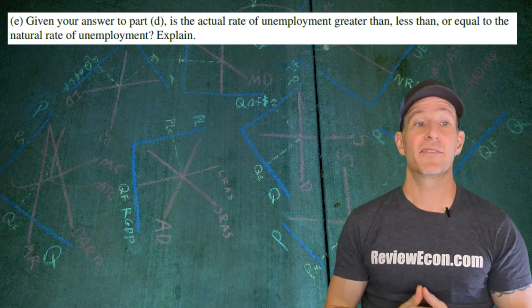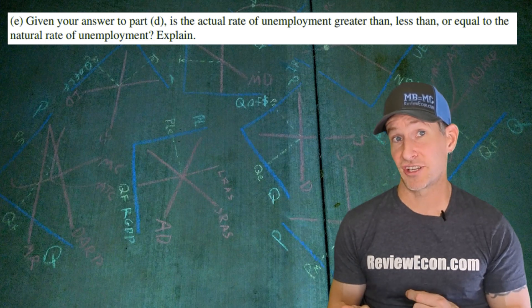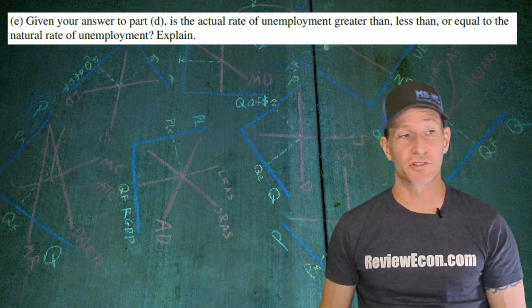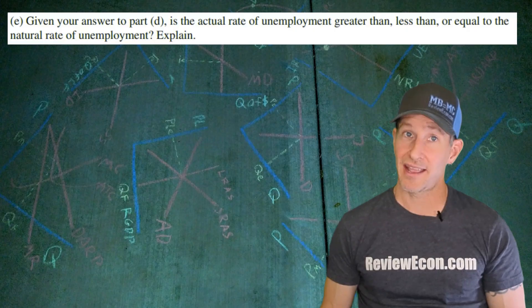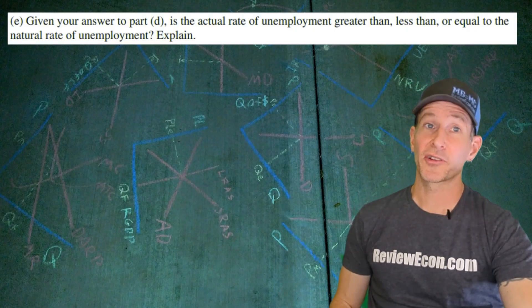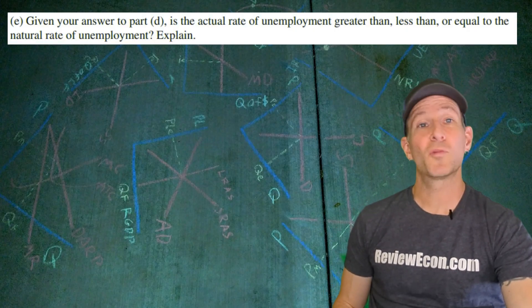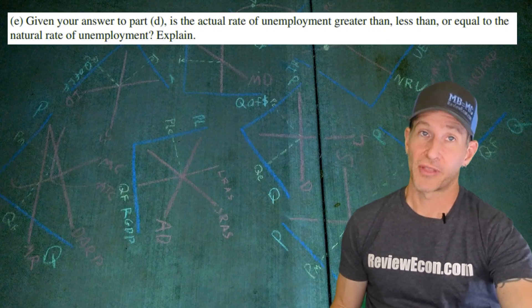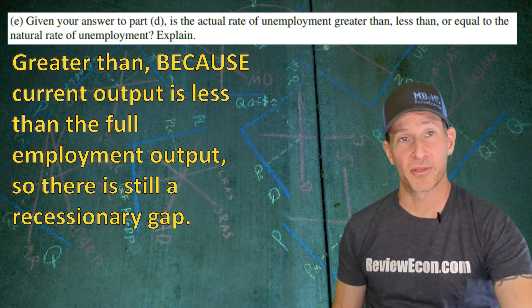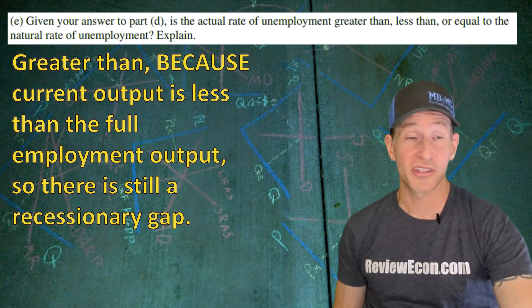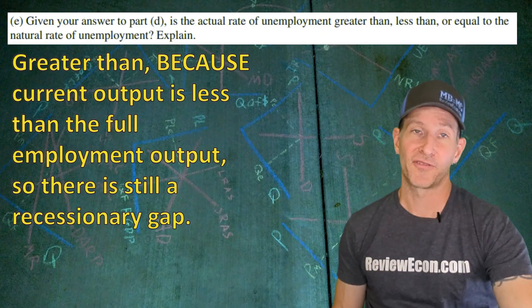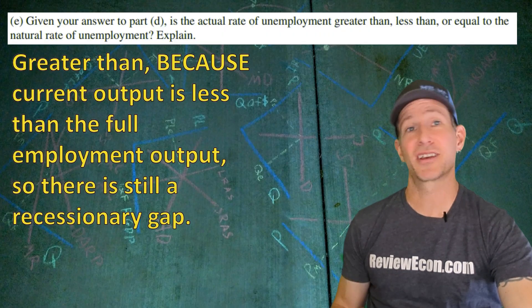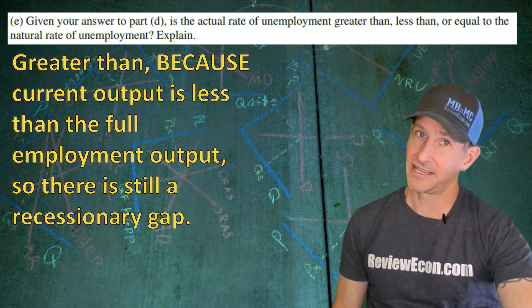For part E, we have to state whether the current rate of unemployment after the shift is greater than, less than, or equal to the natural rate of unemployment, and explain. As we saw in the graph we just drew, there is still a recessionary gap — it's just a smaller one. That means the current output is still less than full employment output, so the answer is greater than. If you have an answer like that, you get yourself a point.